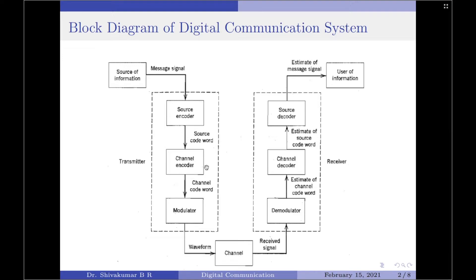Error control is accomplished by the channel coding operation that consists of systematically adding extra bits to the output of the source coder. These extra bits do not convey any information but help the receiver to detect and/or correct some of the errors in the information bearing bits. There are basically two methods of channel coding. The first is called block coding, in which the encoder takes a block of k information bits from the source encoder and adds r error control bits, where r is dependent on k as well as the error controlling capabilities desired.